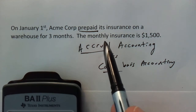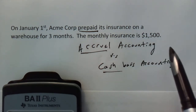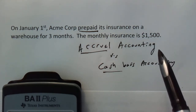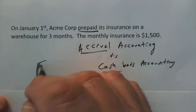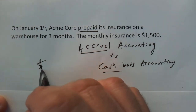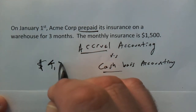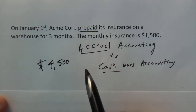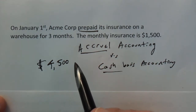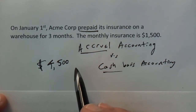The insurance is $1,500 per month. So that means they're prepaying — they're writing a check for cash for $4,500. We'll ignore for a moment the fact that the bookkeeper and accountant is working on January 1st when they should be recovering from New Year's Eve.